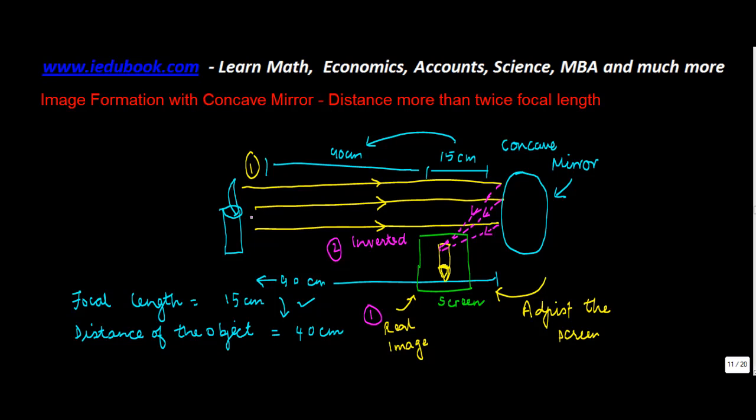So if the candle is like this, the flame is going to come towards the bottom and the candle will be there. Third property is that again this image is going to be smaller in size than object.